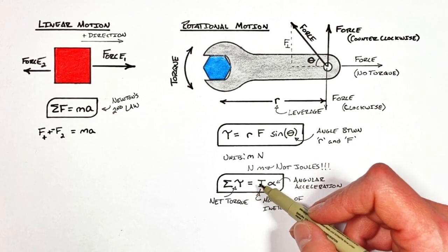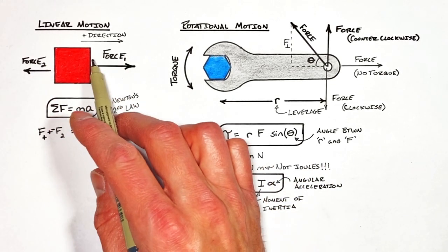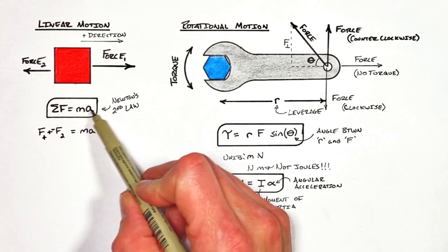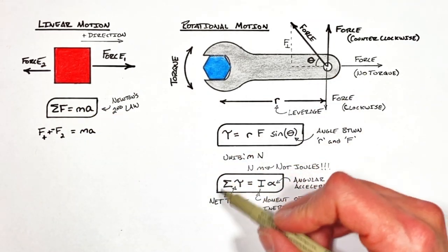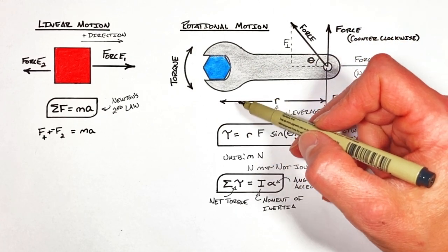But the key takeaway of this is I want you to realize that just like a linear force caused an object to accelerate in a line, an unbalanced torque will cause an object to accelerate in a circle.